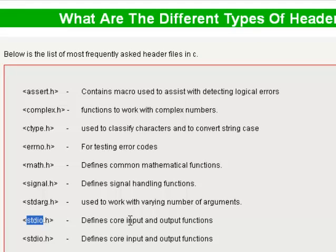So stdio.h defines the standard input output, declares the standard input output functions. The conio.h declares the standard console input output functions.